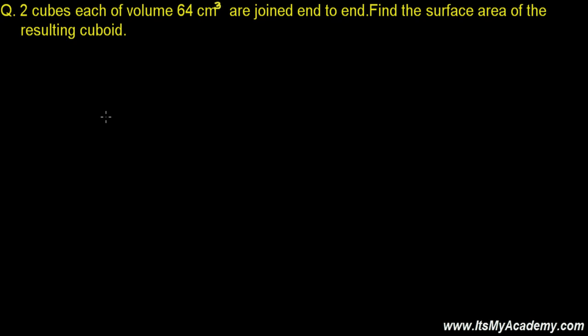Here I'm going to discuss a question where we combine two cubes together and find the total surface area. The question says: two cubes, each of volume 64 centimeter cube. Both cubes look the same. The key point is that a cube has length, breadth, and height all equal — unlike a cuboid where they might differ. So both cubes have equal length, breadth, and height, with volume 64 cm³ each.